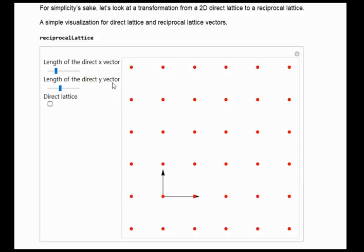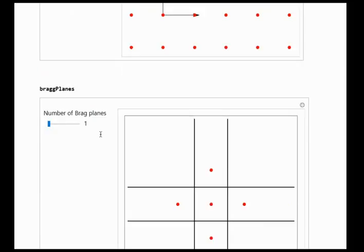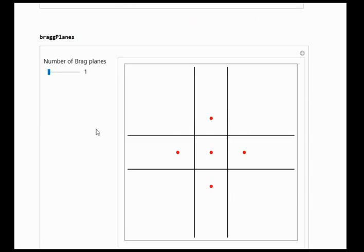The first Brillouin zone can be defined as a set of points in reciprocal space that can be reached from a specific point of origin without crossing any Bragg planes. So what are Bragg planes? A Bragg plane, or in this case a Bragg line, is a line which perpendicularly bisects a reciprocal lattice vector, a vector which connects two lattice points. And the closest Bragg planes are essentially closing the Brillouin zone.